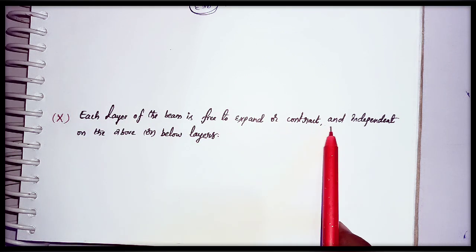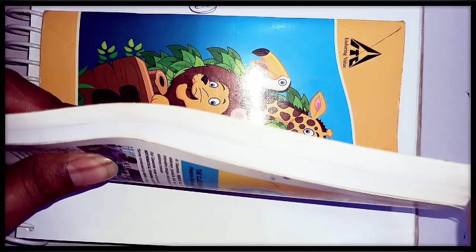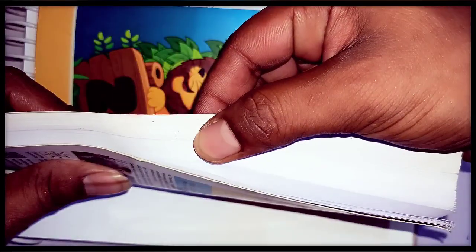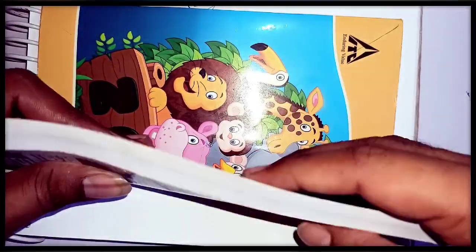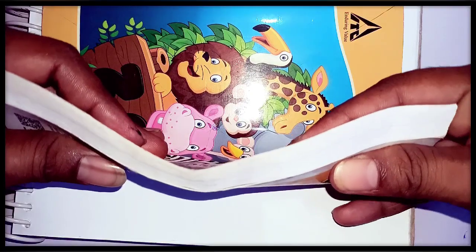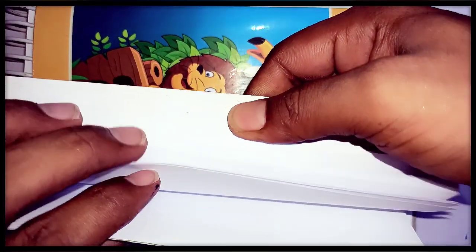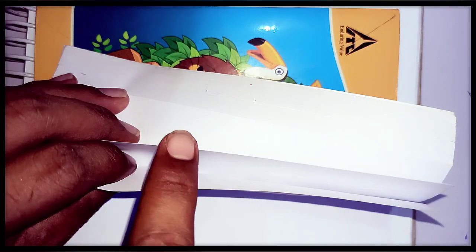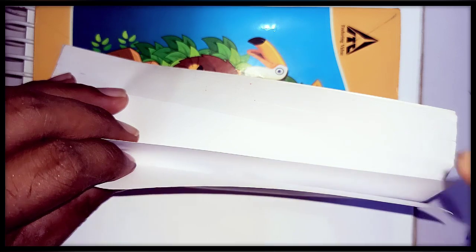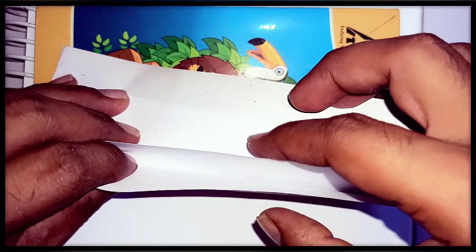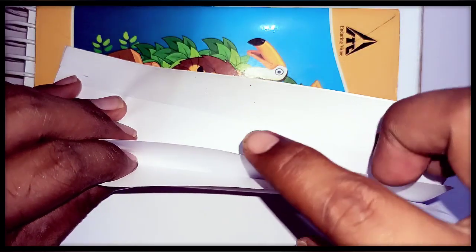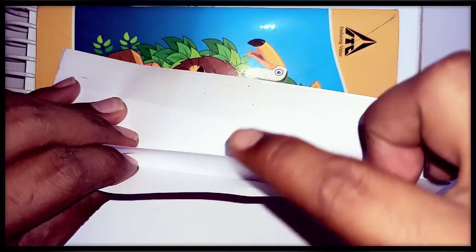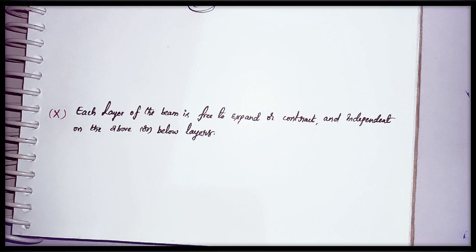The last assumption is that each layer of the beam is free to expand or contract independently of the layers above or below it. When a load is applied and the beam deflects, in practice the expansion or contraction of each layer depends on adjacent layers, but in this theory we assume that each layer expands or contracts independently. This is a very important assumption in the theory of pure bending.